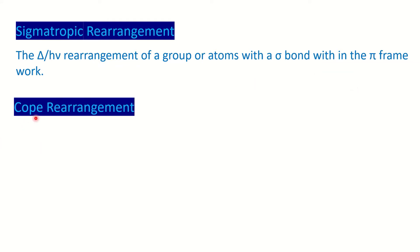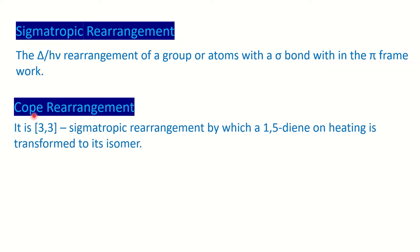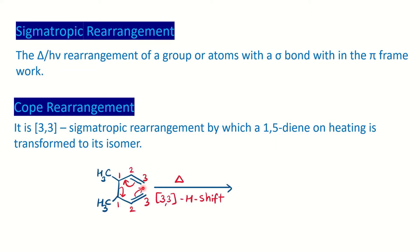A very famous example is called cope rearrangement. Cope rearrangement is the 3-3 sigmatropic rearrangement when you have a 1,5-diene system. If this system is given to you, you can see if you start numbering from the terminal pi bond, it is 1-2-3-4-5-6. So the 1,5-diene system is there.